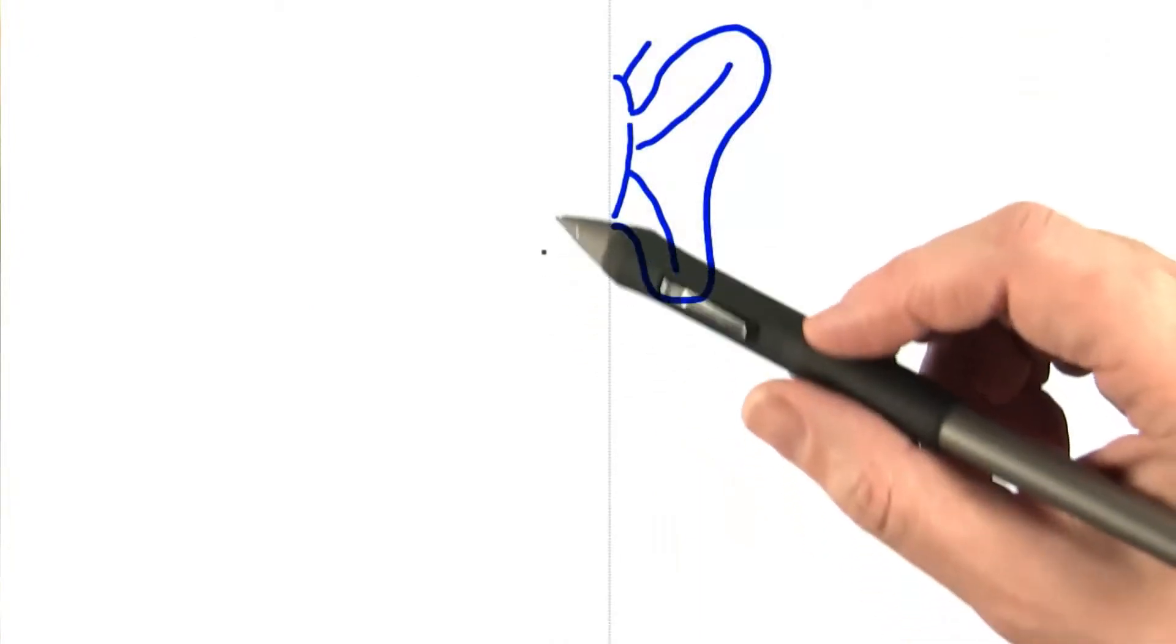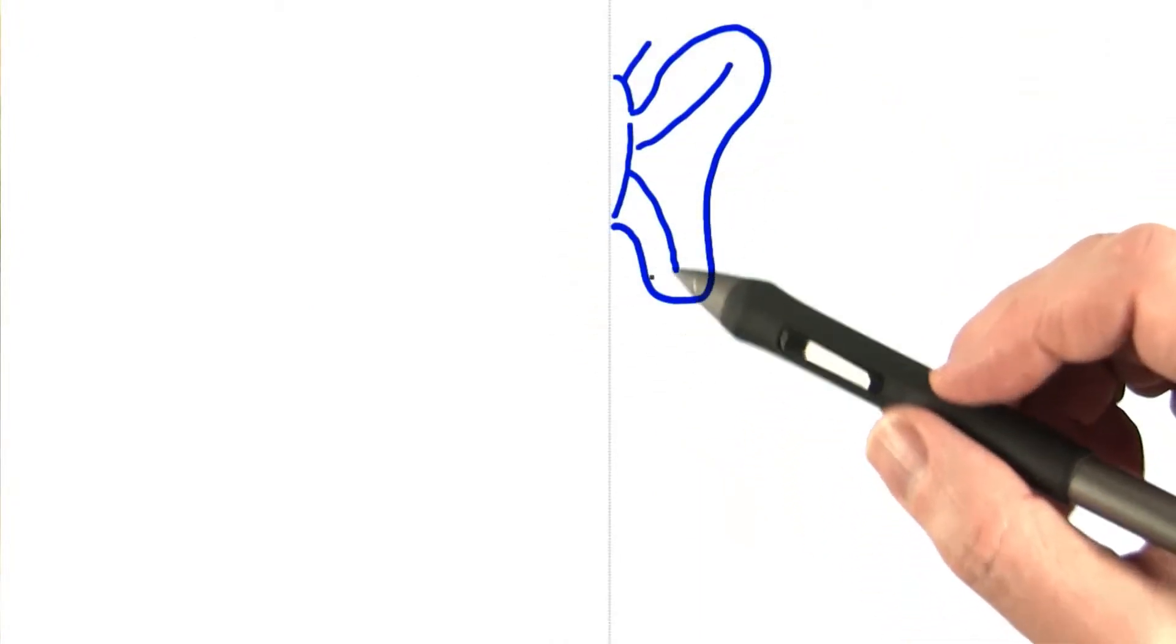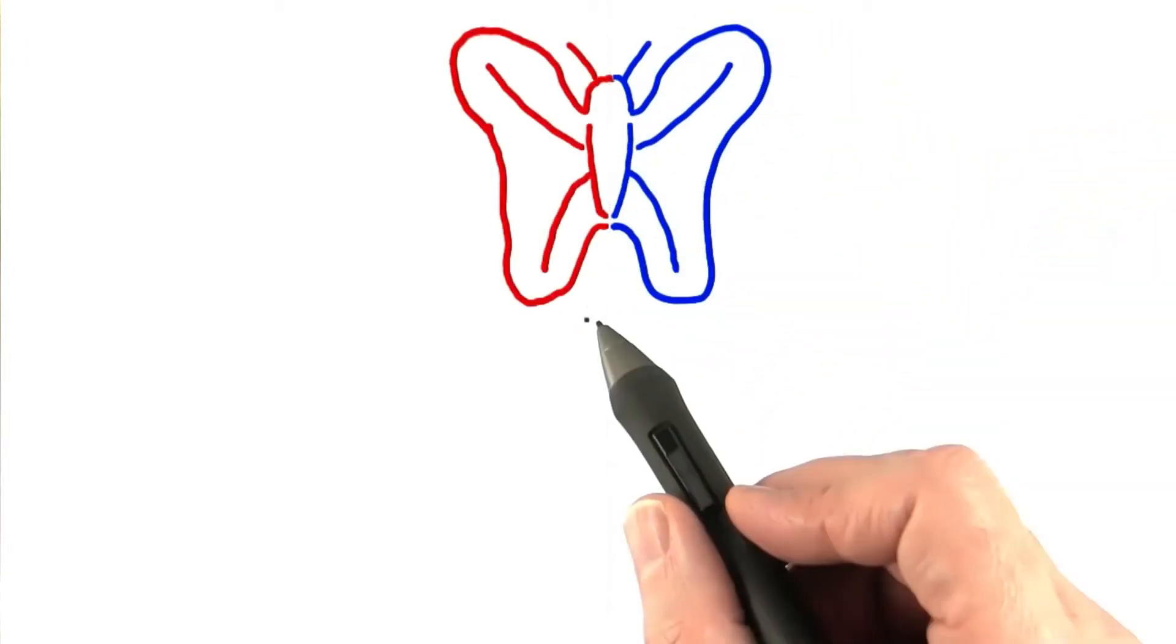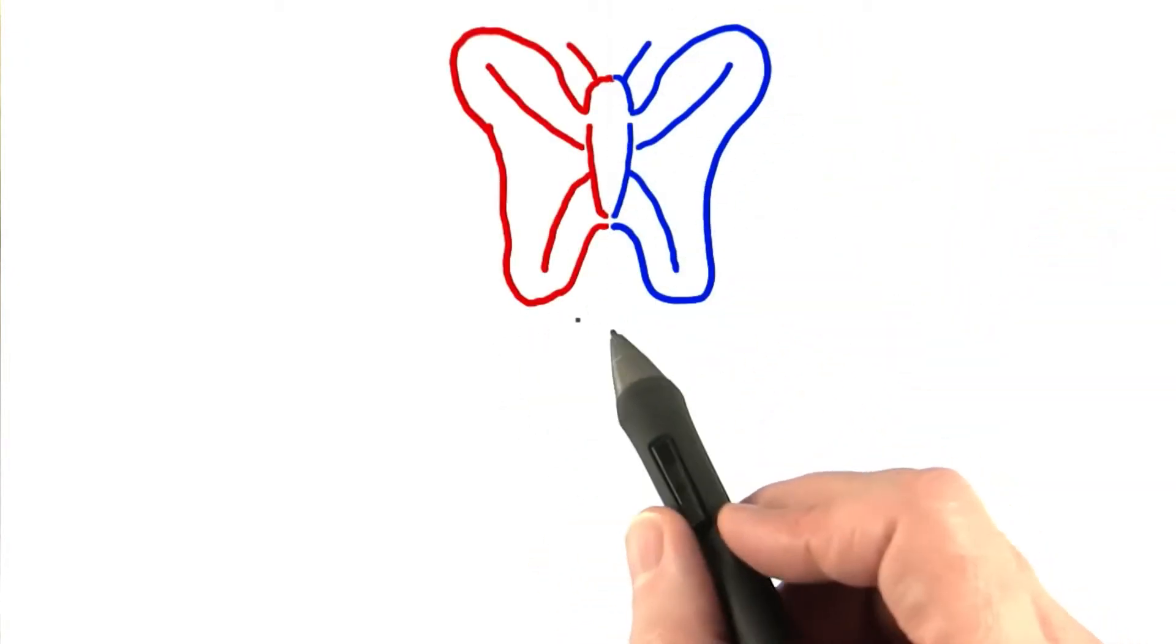One place where mirroring sometimes is used is when modeling. Instead of sculpting a whole moth, for example, you can make half the moth. You then use a mirroring matrix to create the other half.